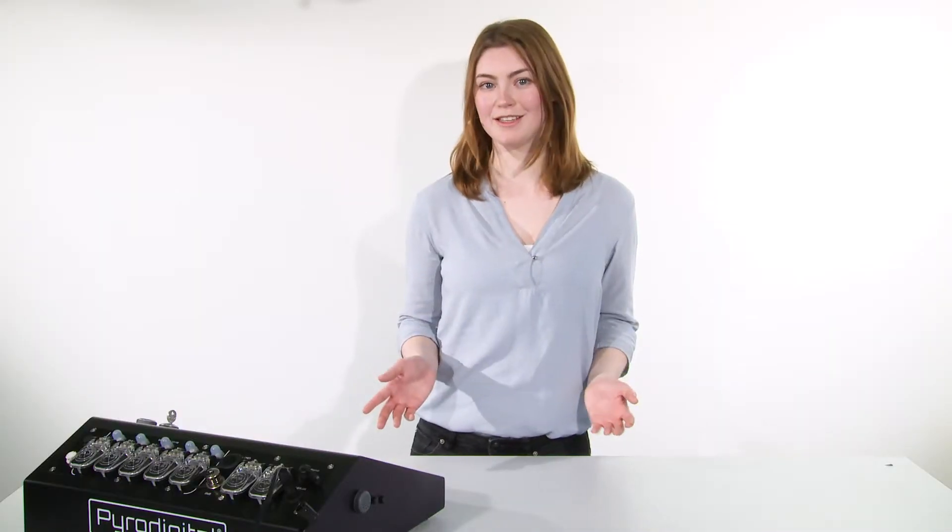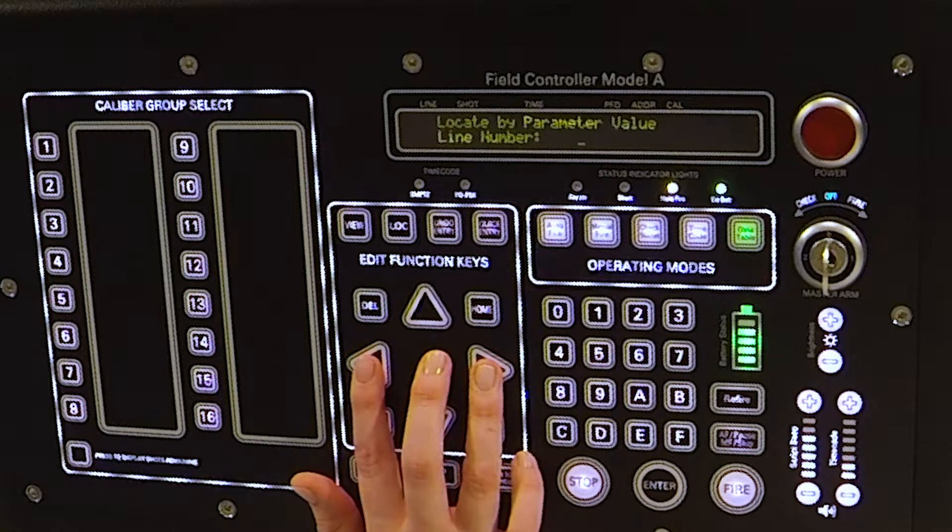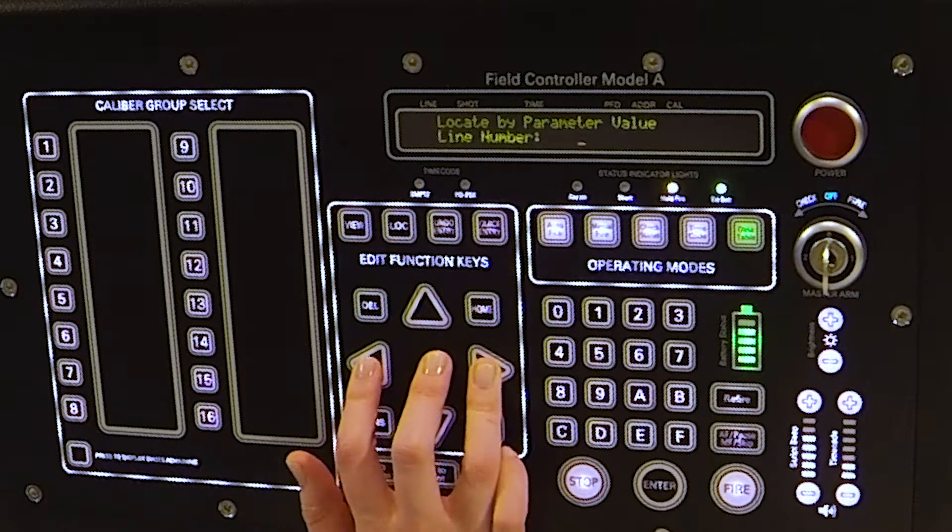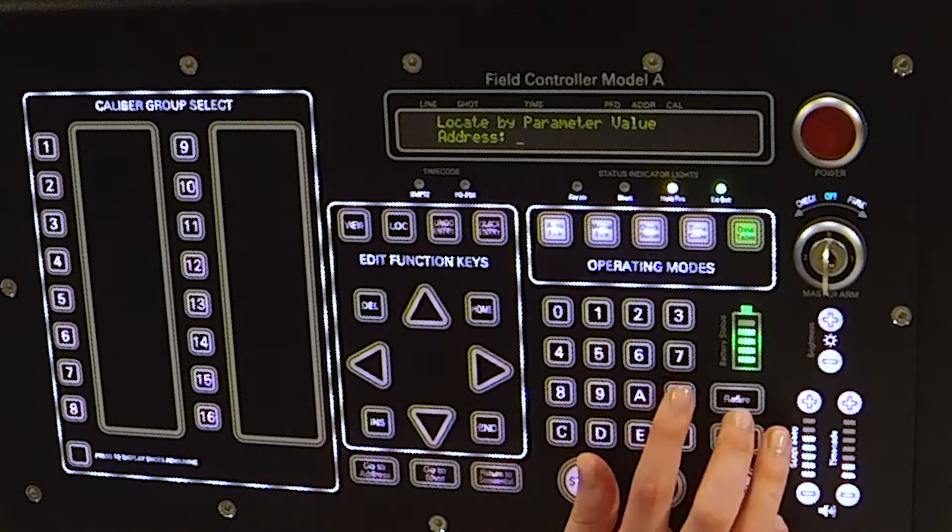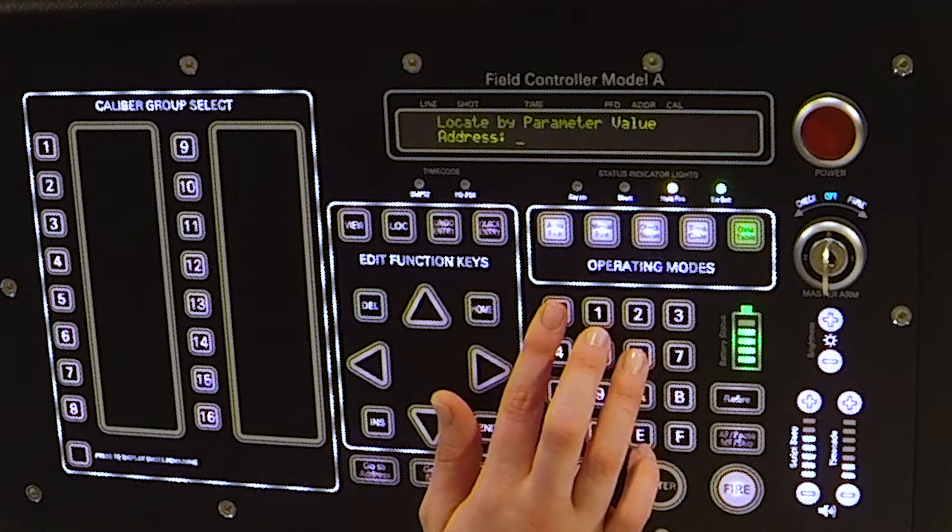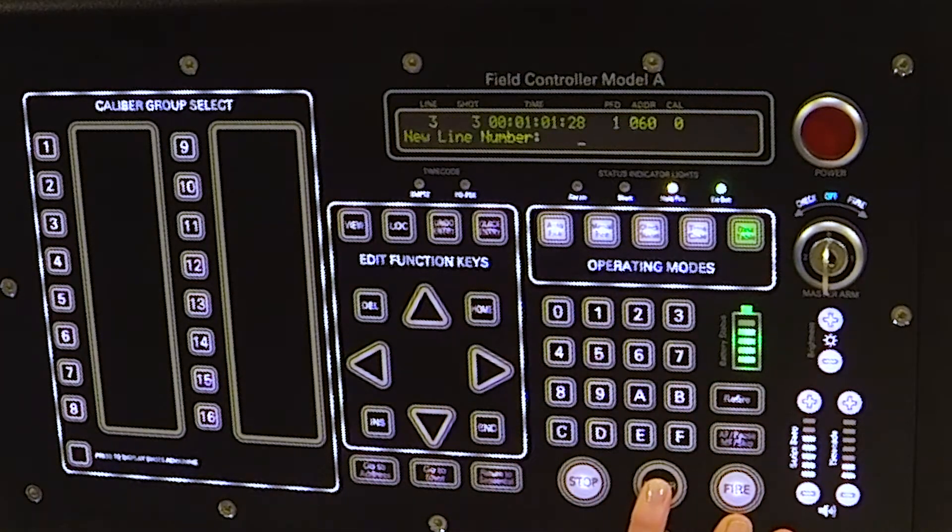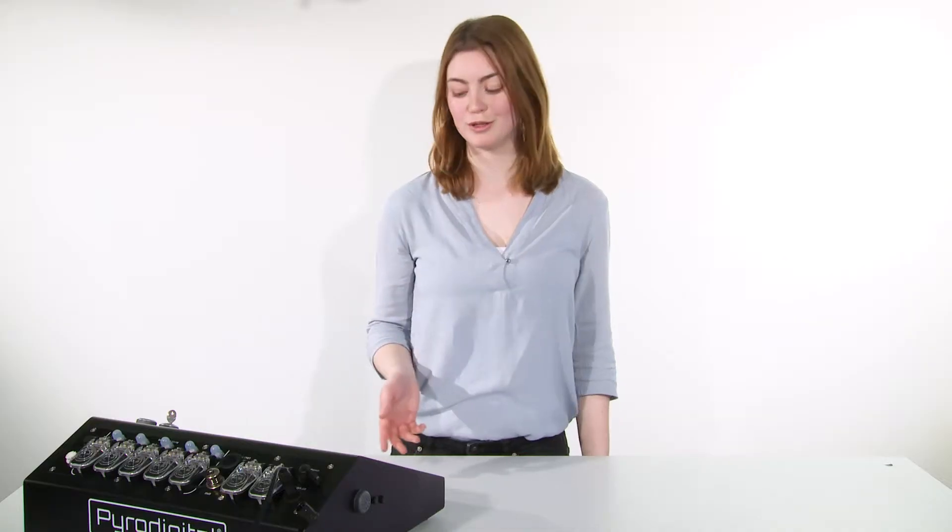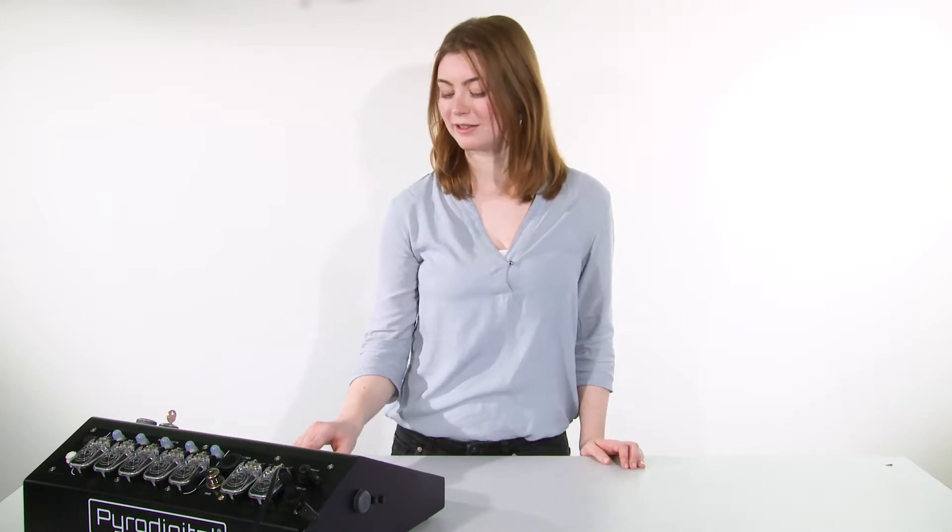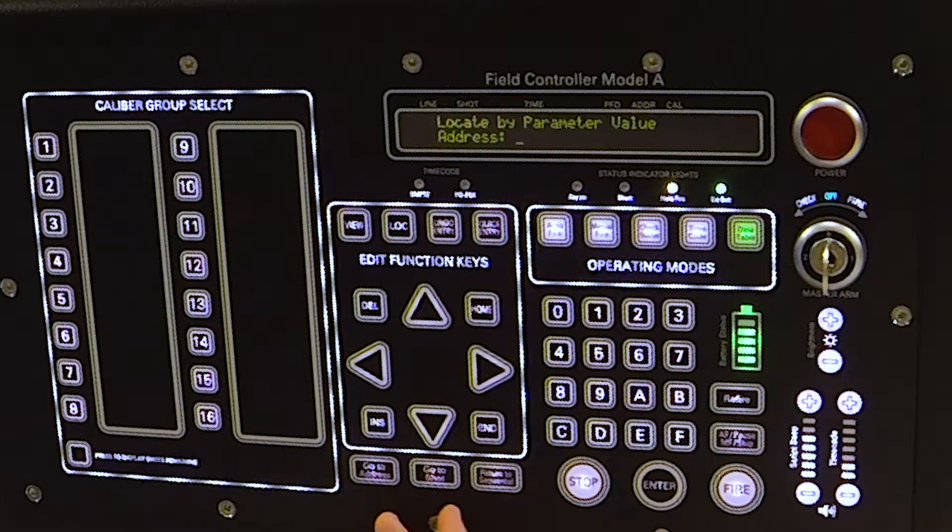With the locate key, you can locate any script line within your script table. You can search by a parameter that you would like to use by switching with the arrow keys. Then you can type in the value you would like to see. For example, I would like to search for this address. Press enter and it will lead you directly to that script line. You can also use the go to address and the go to shot key as a shortcut. With this, you will be directly led to the locate display of the specific parameter.